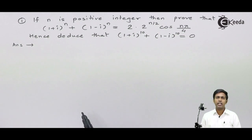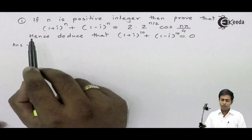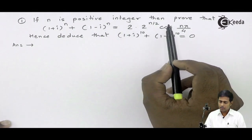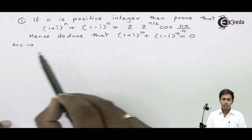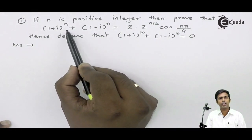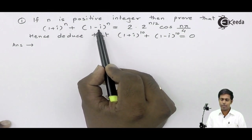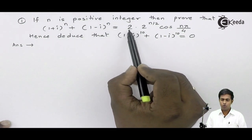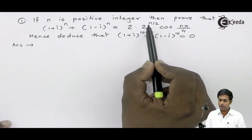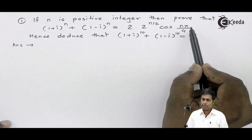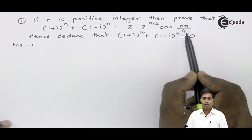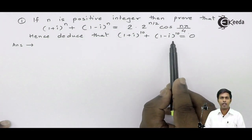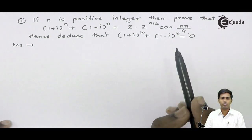The first numerical is: if n is a positive integer, then prove that (1+i)^n + (1-i)^n is equal to 2·2^(n/2)·cos(nπ/4). Hence deduce that (1+i)^10 + (1-i)^10 equals 0.